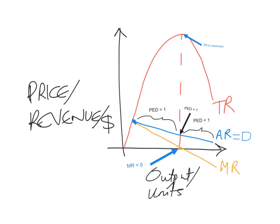Why is the relationship between total revenue and marginal revenue as such? It comes down to price elasticity of demand. On a regular downward sloping demand curve, the elasticity is not constant. At higher prices — the top part of the demand curve — price elasticity of demand is greater than one and demand is elastic. At lower prices, price elasticity of demand is less than one and demand is price inelastic. At the midpoint, price elasticity of demand equals one — demand is unit elastic. When demand is elastic, total revenue will increase as more output is produced and sold.